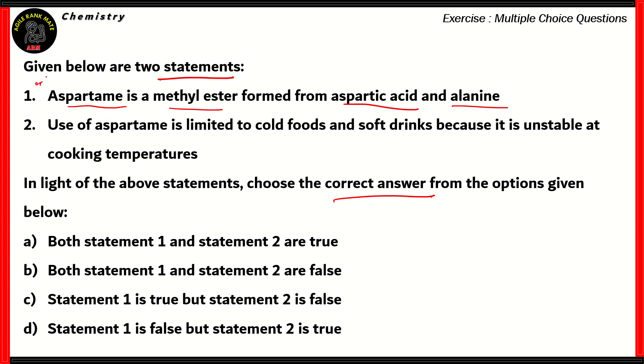Now, aspartame is what we call an artificial sweetener. It's used instead of cane sugar, and that's because they want to reduce calories in sweet products. And yes, aspartame is a methyl ester, so that part's correct. One of its components is aspartic acid, and that's also correct. However, the amino acid component of aspartame isn't alanine. It's actually phenylalanine. Now, alanine is completely different from the amino acid phenylalanine, so therefore, statement number one is incorrect.